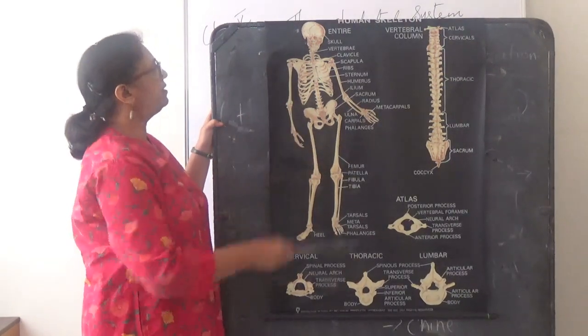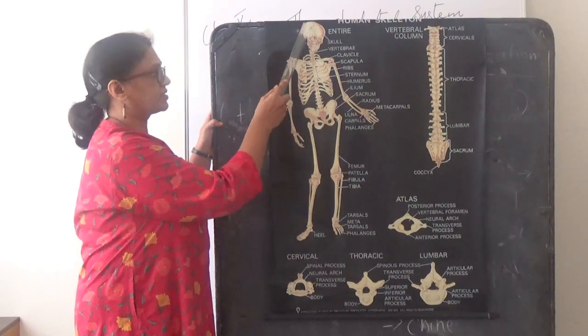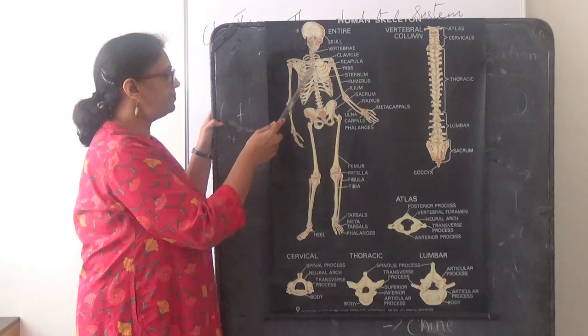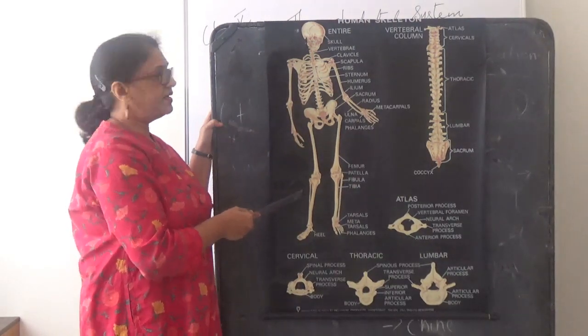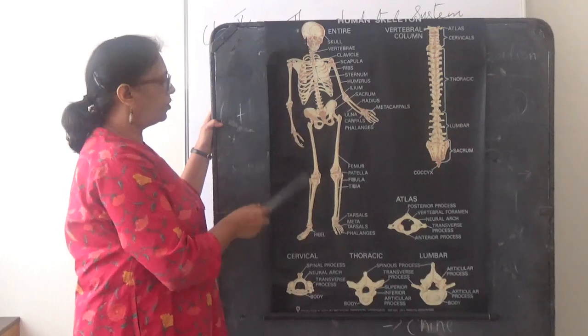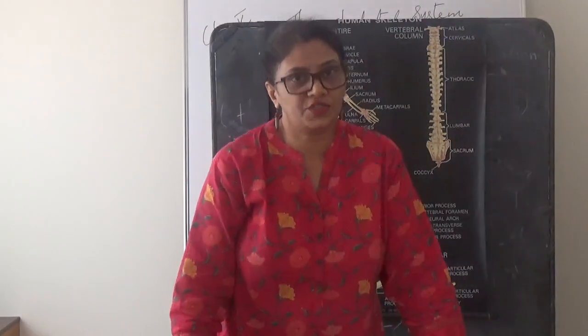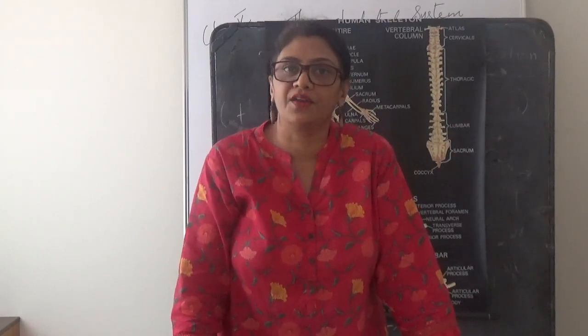Once again, the major bones in our body are the skull, the backbone, the ribs, and the bones in our limbs. In today's video we stop with the bones in our body. You can read the lesson and learn some of the difficult words. Thank you.